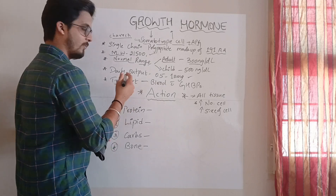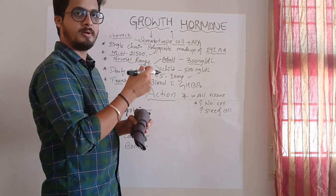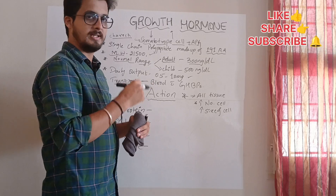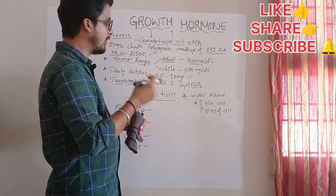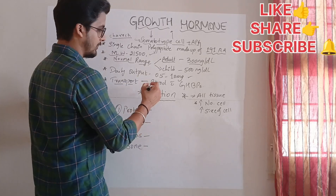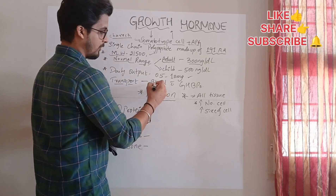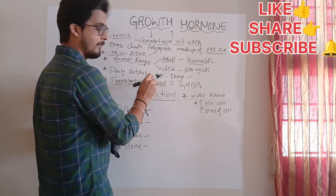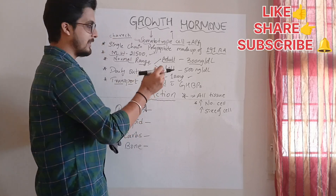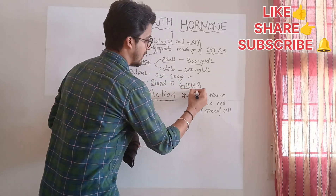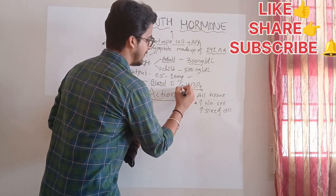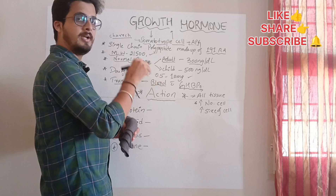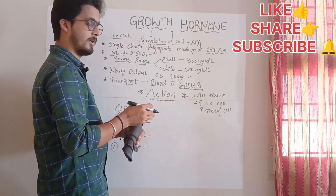Regarding transport: once the growth hormone is released from the anterior pituitary gland, it transfers into the bloodstream, where growth hormone binding proteins carry it to the target organ.